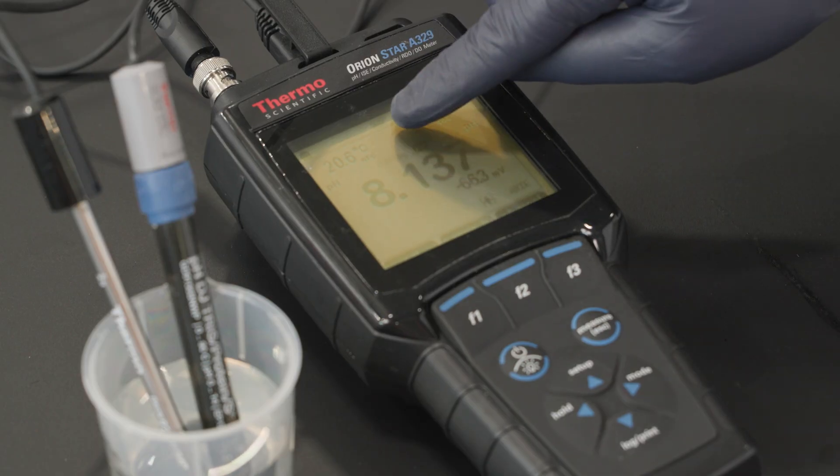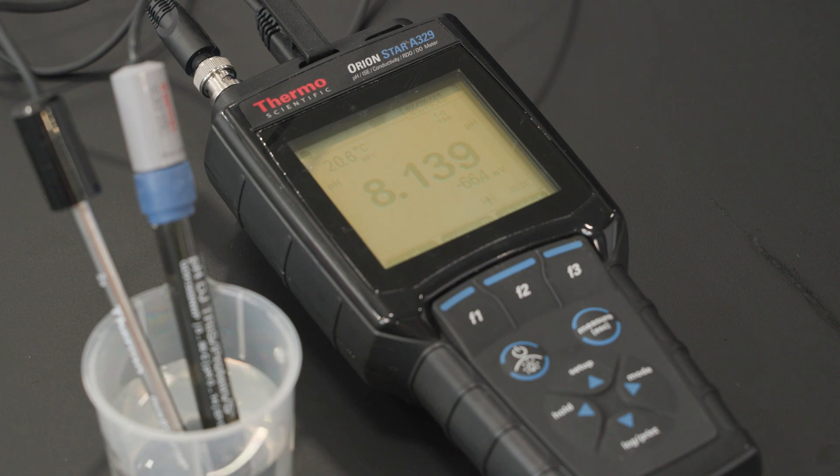Multipoint calibration can help give you the most accurate pH readings by using two or more buffer solutions for correct determination of slopes and offset.